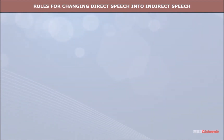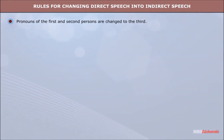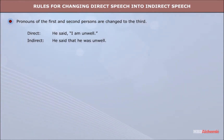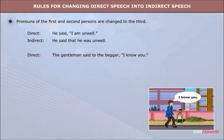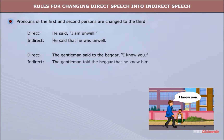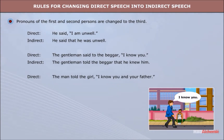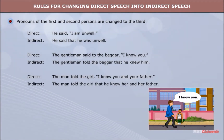Pronouns of the first and second persons are changed to the third. Direct: He said, 'I am unwell.' Indirect: He said that he was unwell. Direct: The gentleman said to the beggar, 'I know you.' Indirect: The gentleman told the beggar that he knew him. Direct: The man told the girl, 'I know you and your father.' Indirect: The man told the girl that he knew her and her father.